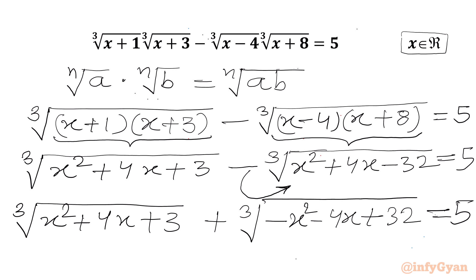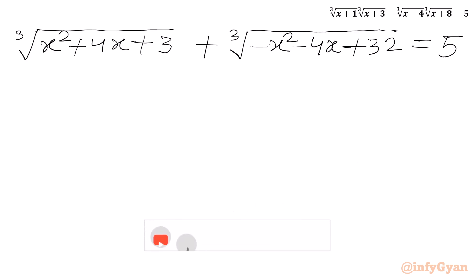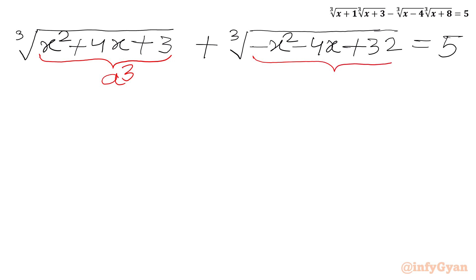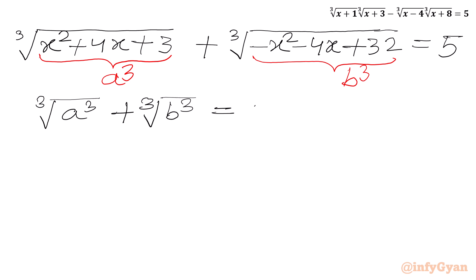Now we will use substitutions. Let's write our equation 1. We will consider our first radicand equal to a³ and the second radicand equal to b³. So the first equation we can write is cube root of a³ plus cube root of b³ equal to 5. Since cube root and cube cancel, we get our first equation: a plus b equal to 5.